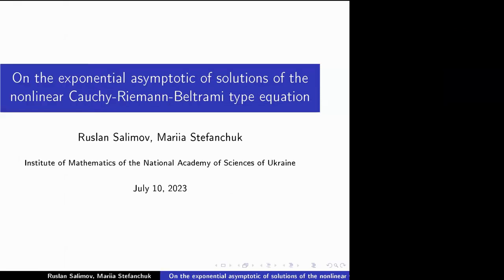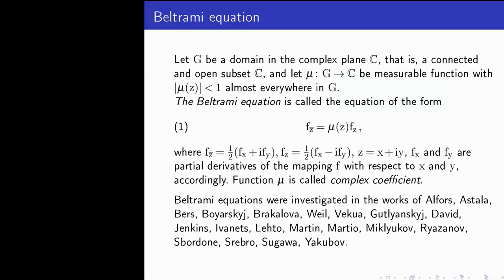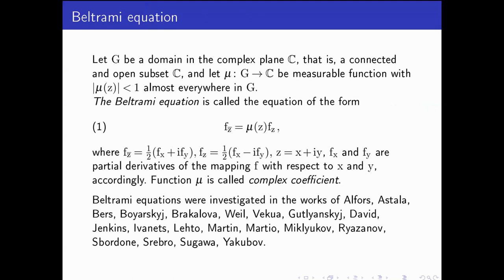Let g be a domain in the complex plane C — that is, a connected and open subset of C — and let μ from g to the complex plane C be a measurable function with |μ| less than 1 almost everywhere in g. The Beltrami equation is called the equation of the form (1). The function μ is called the complex coefficient.